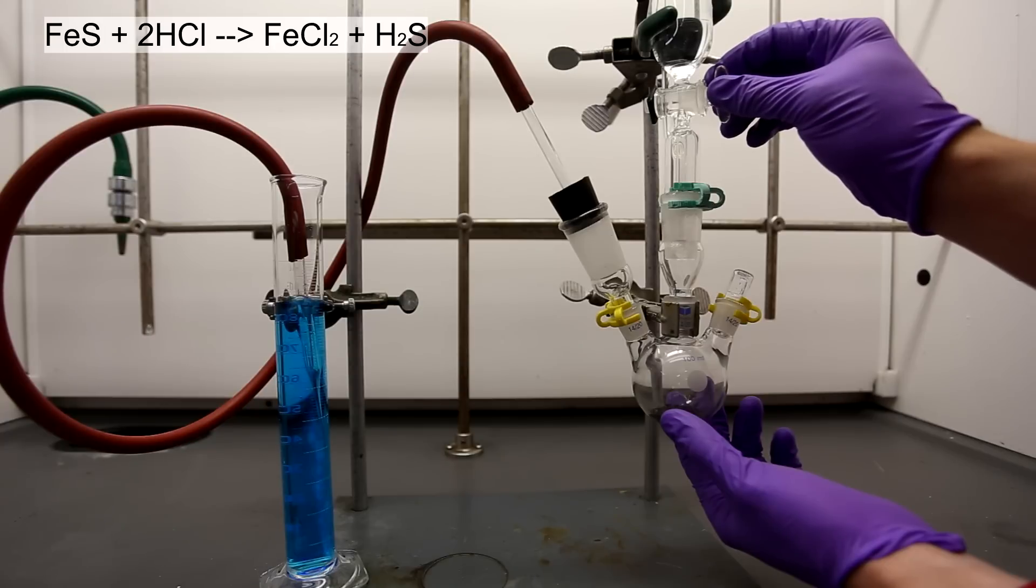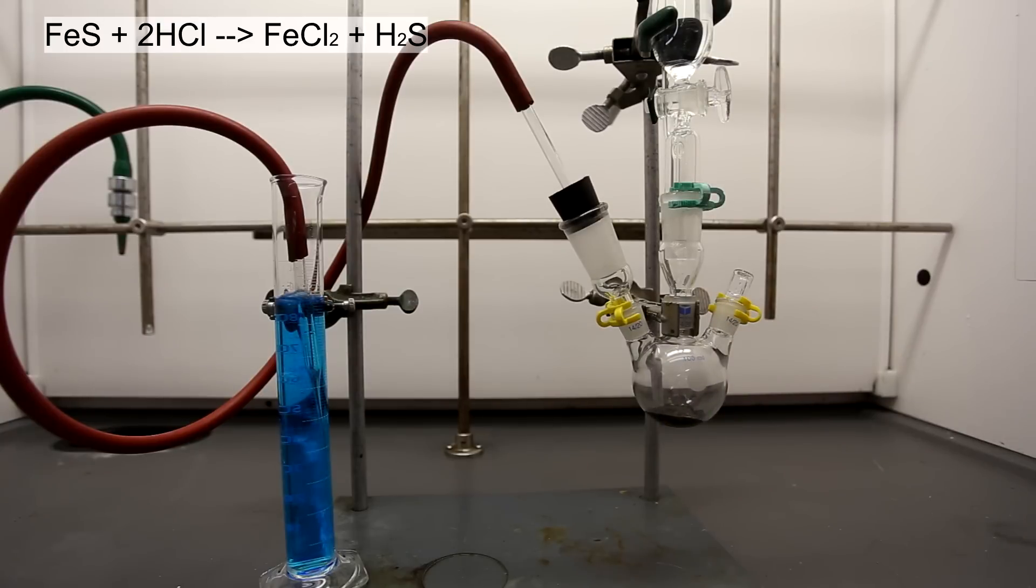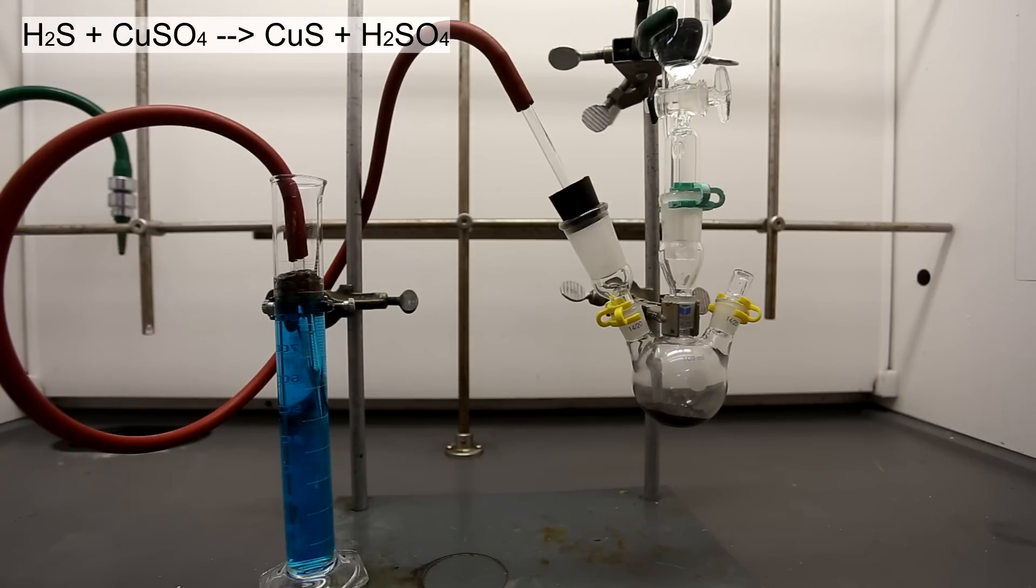At first, the bubbles that come out are not hydrogen sulfide but the air that was in the hose. When the hydrogen sulfide comes into contact with the saturated copper sulfate solution, it forms copper sulfide which immediately precipitates.